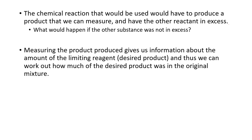Measuring the product produced gives us information about the amount of limiting reagent — that's the desired reactant. And thus, we can work out how much of the desired reactant was in the original mixture. We use the product to work out how much of the desired reactant is in there, and that will allow us to work out how much is there.